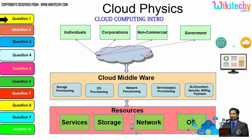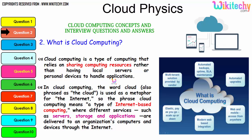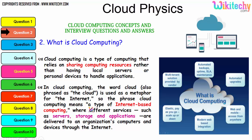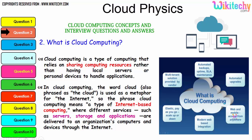This is how the cloud computing architecture works. The definition: cloud computing is a type of computing that relies on sharing computing resources rather than having local servers or personal devices to handle applications. The word 'cloud' is used as a metaphor for the internet, so cloud computing means internet-based computing. Services such as servers, storage, and applications are delivered to an organization's computers and devices through the network. Key features include multi-tenant solution, pay-as-you-go, modern web-based integration, web and mobile access, automated upgrades, and automated backups.